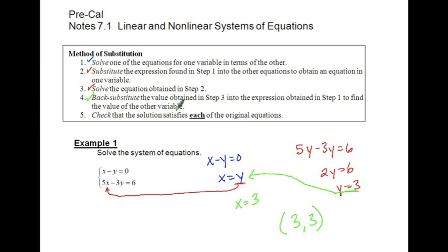So my answer here is the x value and the y value: 3, 3. It says check that the solution satisfies both of the original equations. So if I plug in 3 minus 3, does that equal 0? Yes, it does. 5 times 3 minus 3 times 3: 15 minus 9 does give me 6. So both of those work and that takes care of step number five.